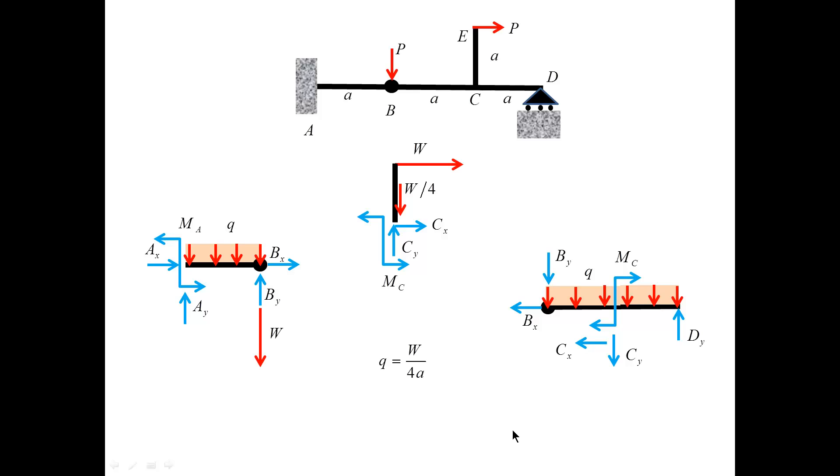Now, I need to identify all of the unknown forces, and they're all shown in blue. And the way I'll proceed, I'll start with this free body diagram, because it has three equations, three unknowns. Once I determine the forces at C and the couple at C, I can proceed to this free body diagram and use the three equilibrium equations to determine the unknowns BX, BY, and DY. And finally, I can take BX and BY and determine the remaining three unknowns by analyzing the left free body diagram.